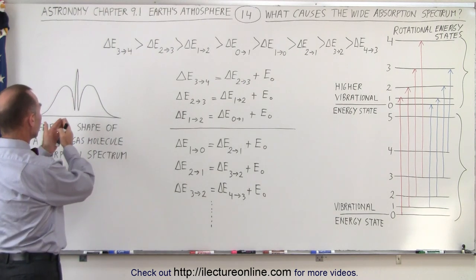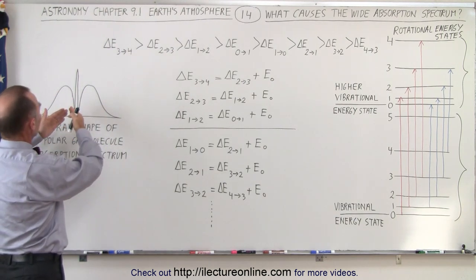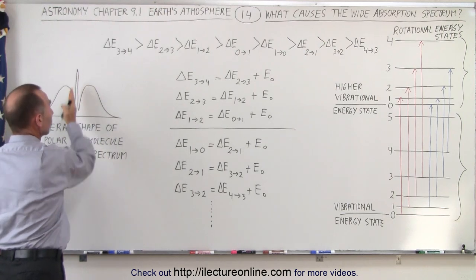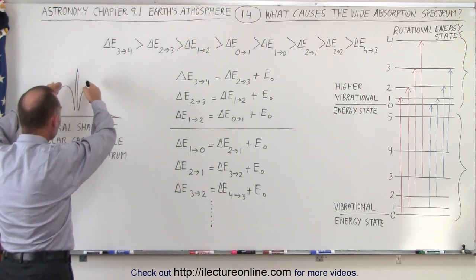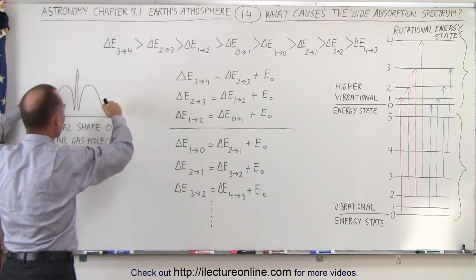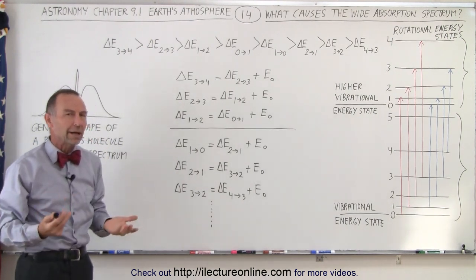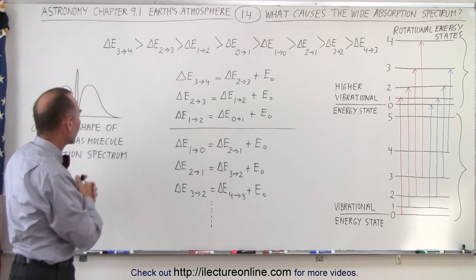The typical absorption spectrum for a molecule looks like this. There's a central spike associated with the vibrational energy state, but then those big two side lobes of energy absorption as well. So where do they come from, and why do they look that way?